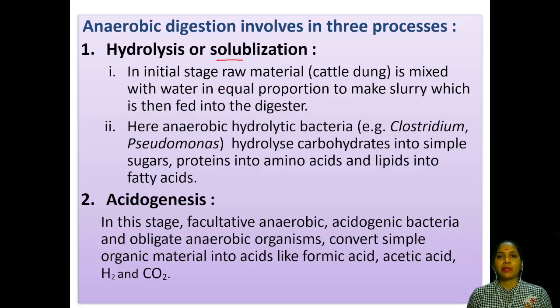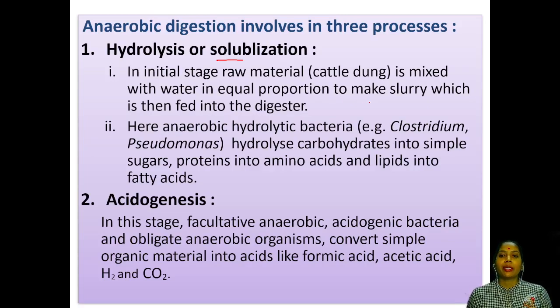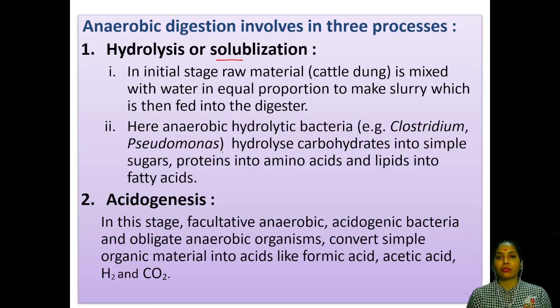The entire process of biogas production is an anaerobic process. There are three steps to form biogas: first is hydrolysis, also known as solubilization; second is acidogenesis; and third is methanogenesis. In each step, we need to know which bacteria are involved and what kind of compound is converted into which product.